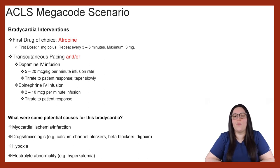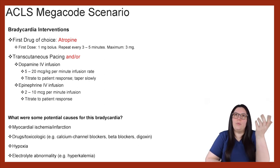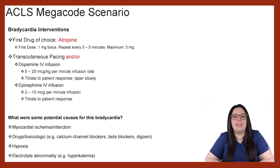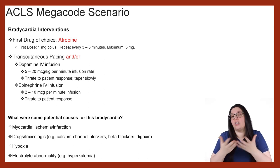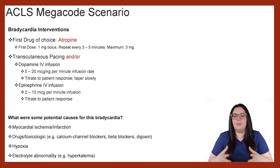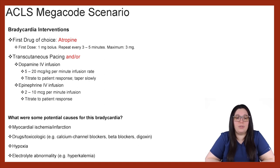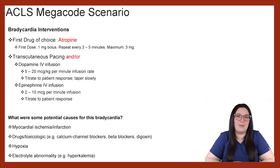What are some potential causes for this bradycardia? Myocardial ischemia as well as infarction could have potentially been taking place. Was there some kind of drug or toxicologic cause such as calcium channel blockers, beta blockers, or digoxin? Sometimes patients overdose on those medications, and that absolutely could be a potential cause. Hypoxia could be another potential cause, as well as electrolyte abnormalities such as hyperkalemia, which absolutely can cause these unstable bradycardias.